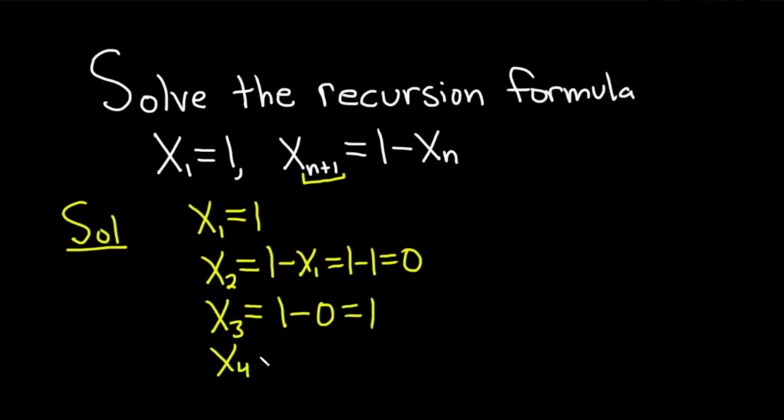x sub 4. Again, it's 1 minus the previous, so 1 minus 1, which is equal to 0. And I'm sure you can guess x sub 5. Well, it's 1 minus the previous, so it's going to be 1.